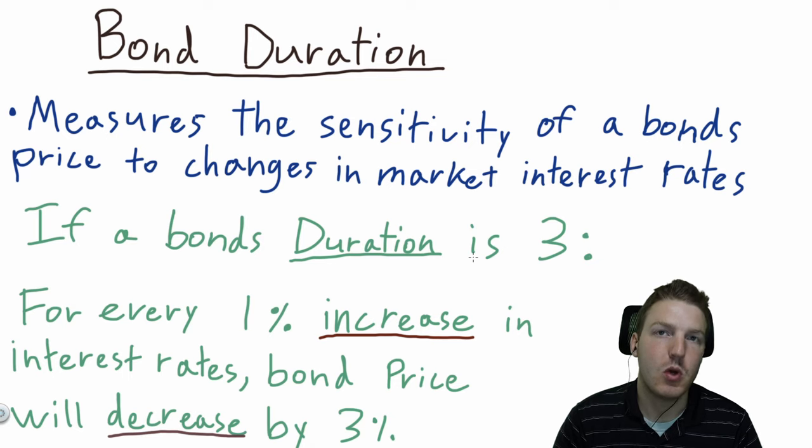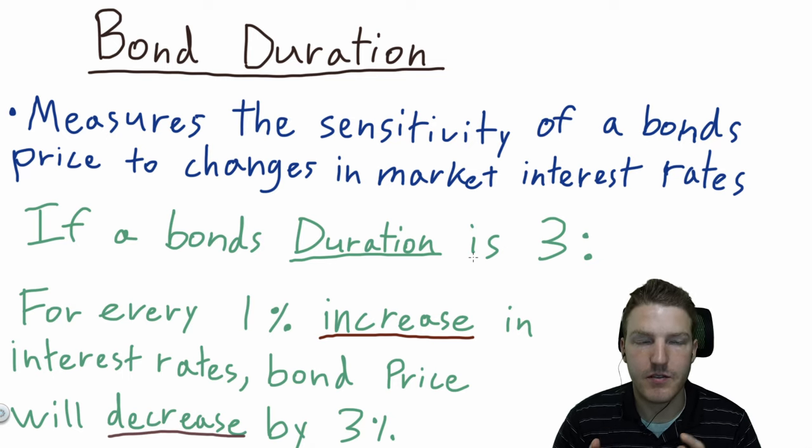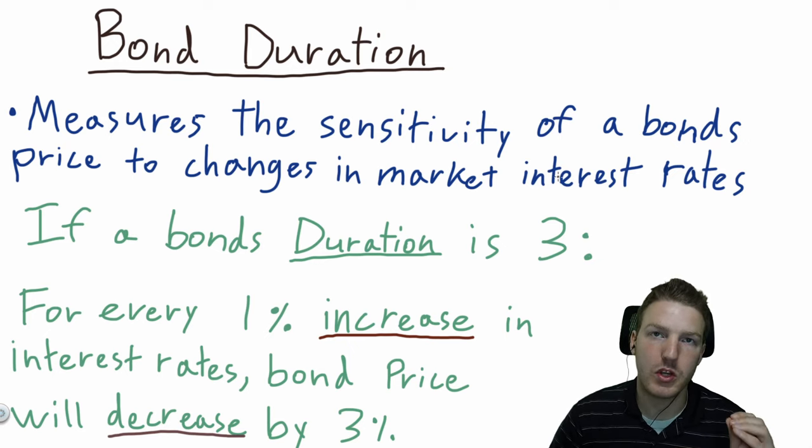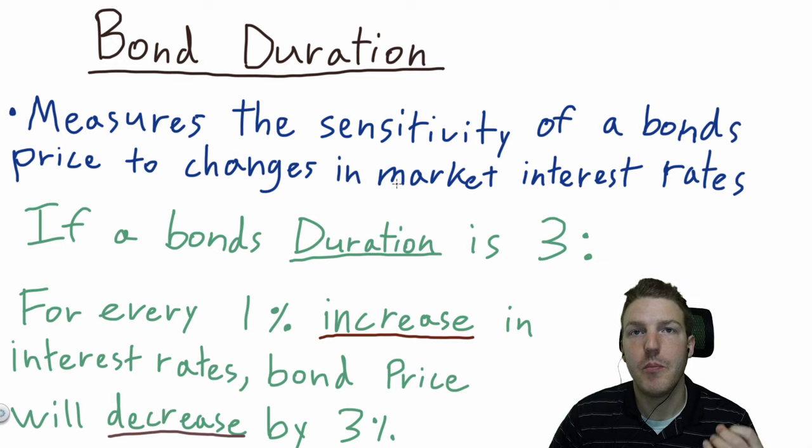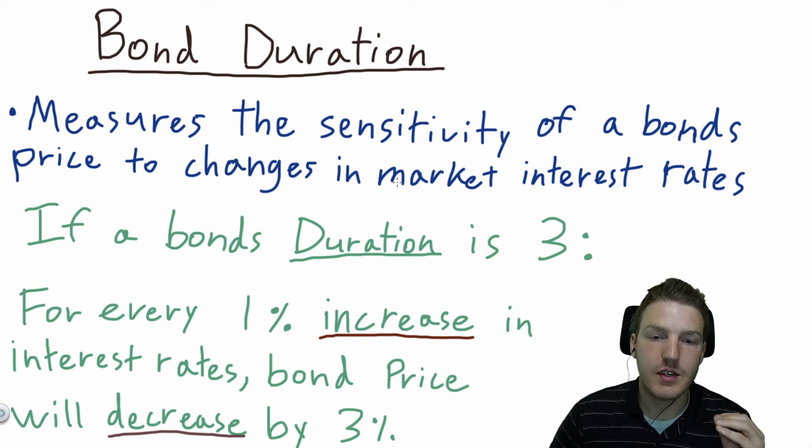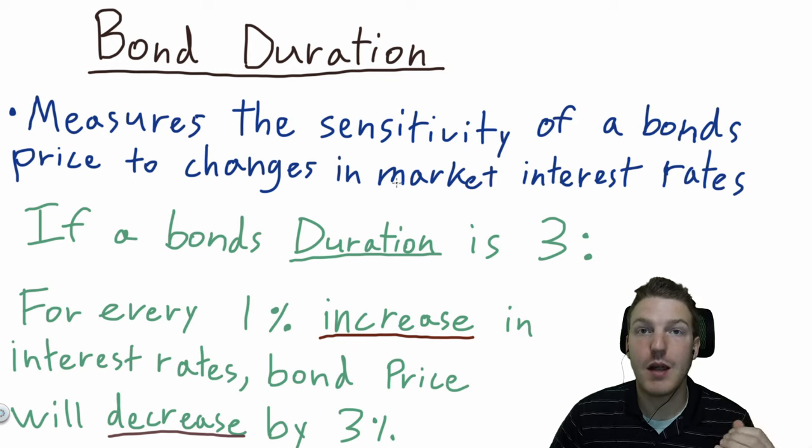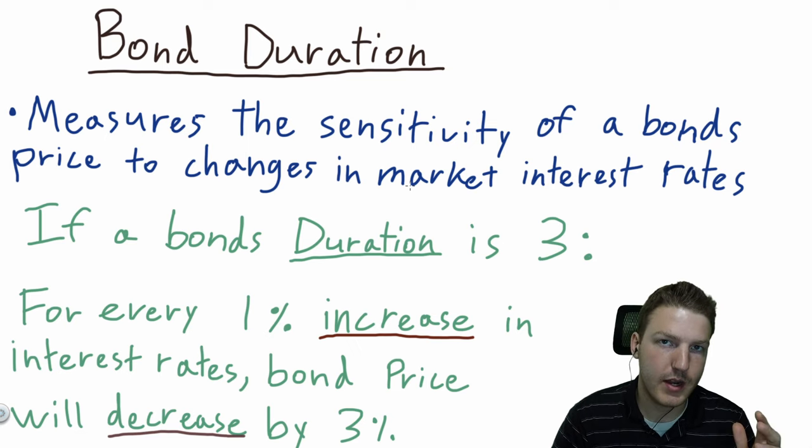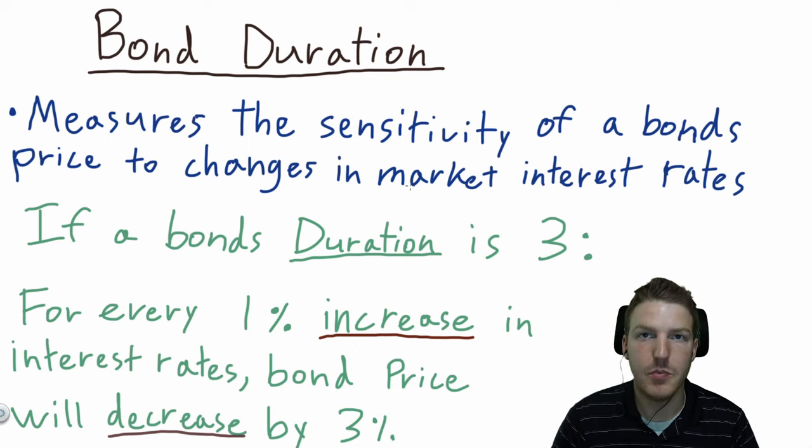Bond duration is one of the most important concepts to learn in fixed income investing. It measures the sensitivity of a bond's price to changes in market interest rates. So if a bond's duration is equal to 3, for every 1% increase in interest rates, the bond price will decrease approximately by 3%. It's an inverse relationship between interest rates and the price of the bond.